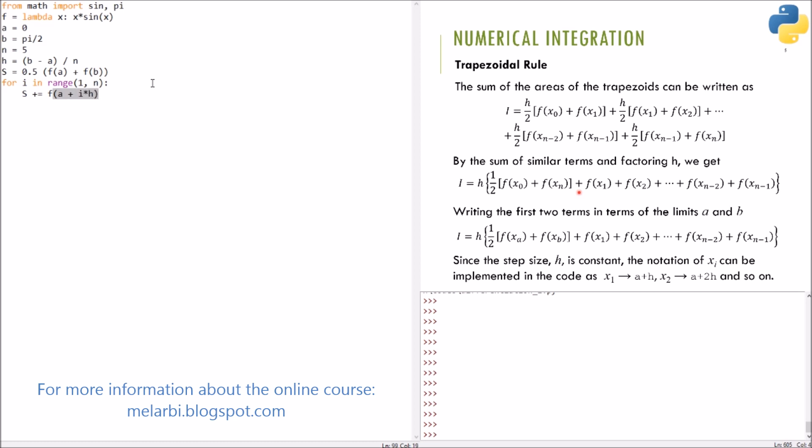Now, when we look to the note here, we say that x1 will be a plus h. So, imagine, here, h is multiplied by i, and i equals to 1. i equals to the subscript here. That means that a plus i multiplied by h. So, when i equals to 1, it will be a plus h.